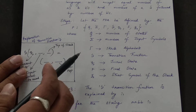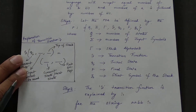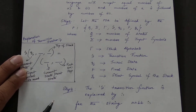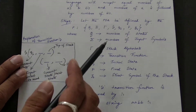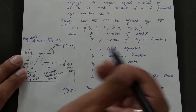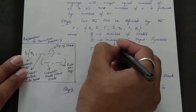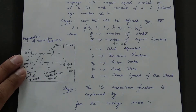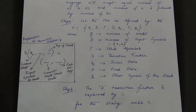Step 2: Write the formal description of the PDA using seven tuples — number of states, input symbols, stack alphabets, transition function, initial state, final state, and start symbol of the stack. Once your diagram or transition function is complete, you fill in what states and input symbols were used. The input symbols are already known: a and b.